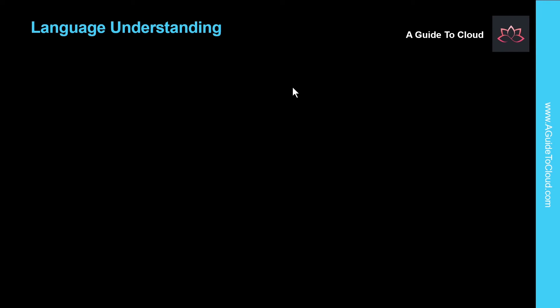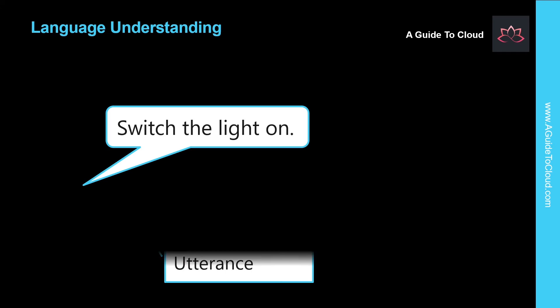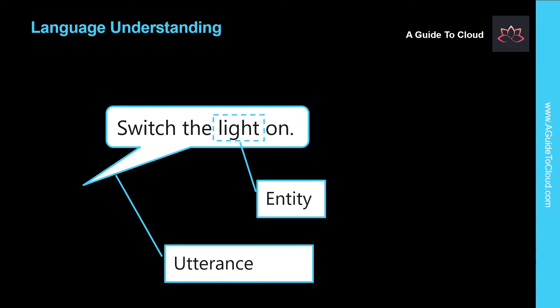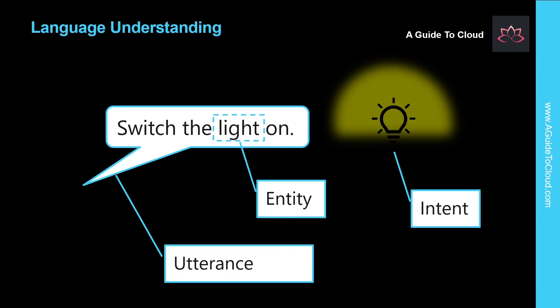The next example is language understanding. The language understanding service enables you to train a language model that can interpret natural language commands. The first concept is utterances — phrases that a user might say or type, for example, 'switch the light on.' The next is entities, which are specific items referenced in the utterance, such as household devices like a light or a fan. And third is intent, which identifies the desired action for the utterance — for example, to switch something on.